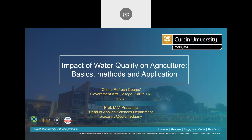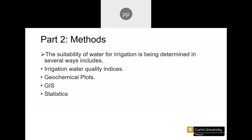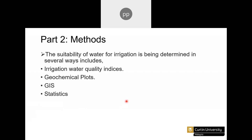Hello everyone, welcome to this part 2 about the methods for assessing water quality for irrigation. Regarding the methods, the suitability of water for irrigation is determined in several ways — there are several methods available to quantify this suitability, and I will list down some of the key methods widely used by researchers.